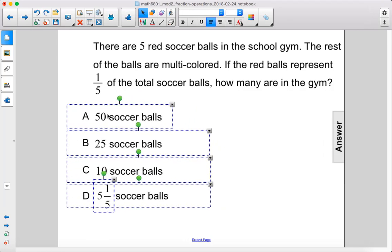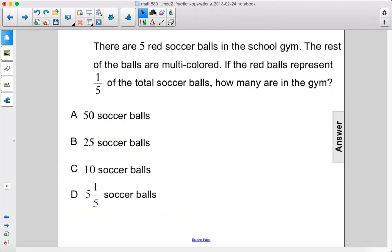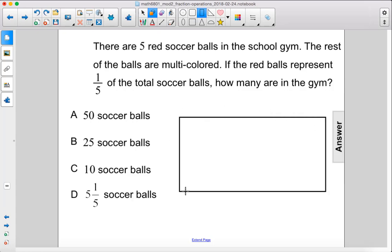I'm going to move these over. Alright, so here's a rectangle that represents the total amount of soccer balls. So there's five red soccer balls, and those represent one-fifth of the total soccer balls. So let's divide this box into five pieces.